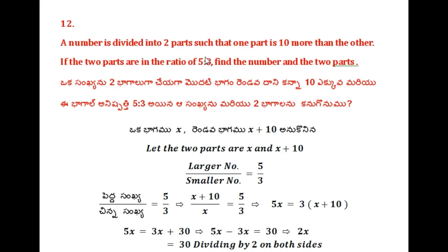The ratio between these two parts — here it is the largest part divided by the smallest part. The ratio equals 5 by 3. So here the largest part is x plus 10 and the smallest part is x. Their ratio is 5 is to 3.